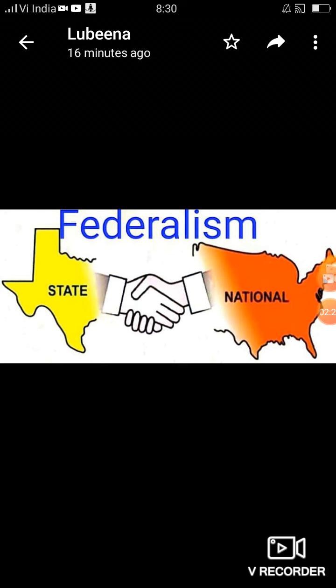India में federalism 1935 के Government of India Act से अपनाया गया है, जिसे Britishers ने पास किया था। तब federal system word का use हुआ था। हमारा federal system America की जैसा नहीं है, क्योंकि America के federal system में समझौता है और कोई भी राज्य कभी भी अलग हो सकता है। लेकिन हमारे constitution में power के साथ-साथ restriction भी लगाई गई है।